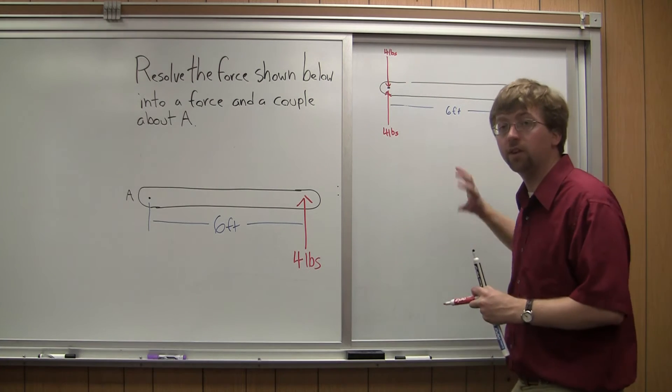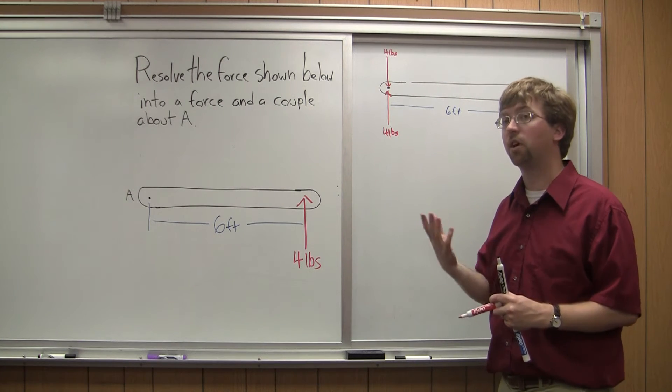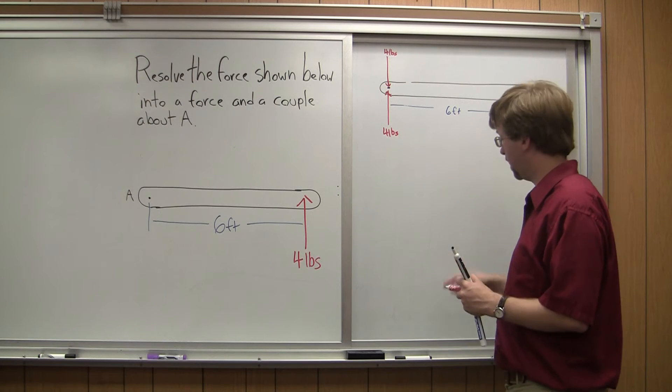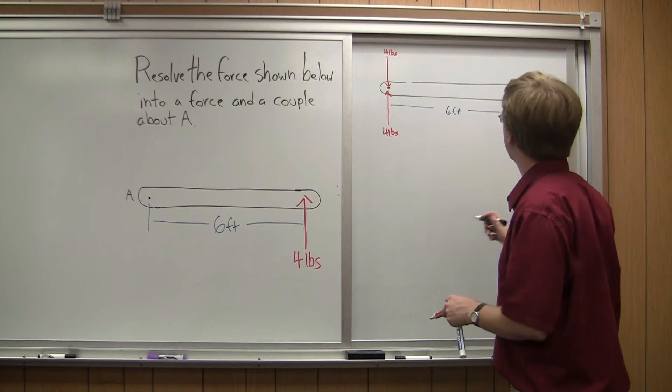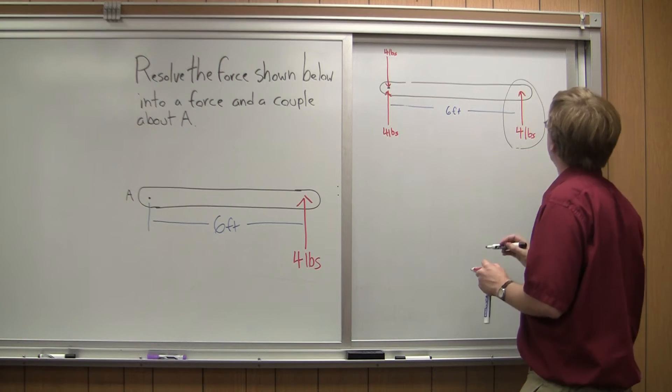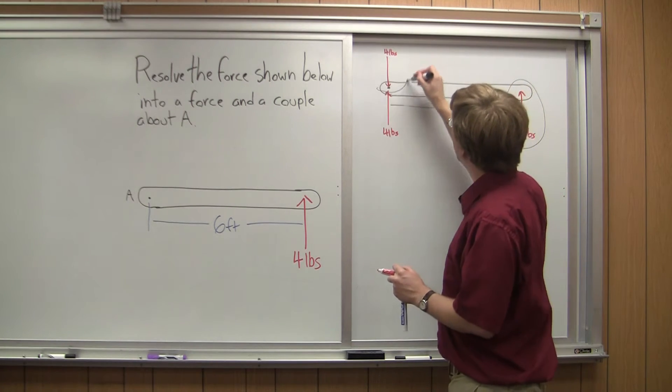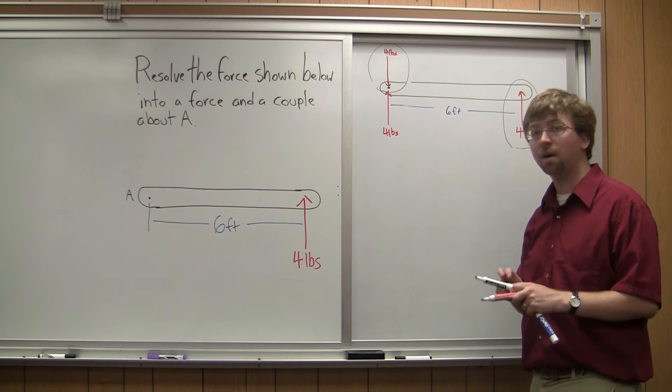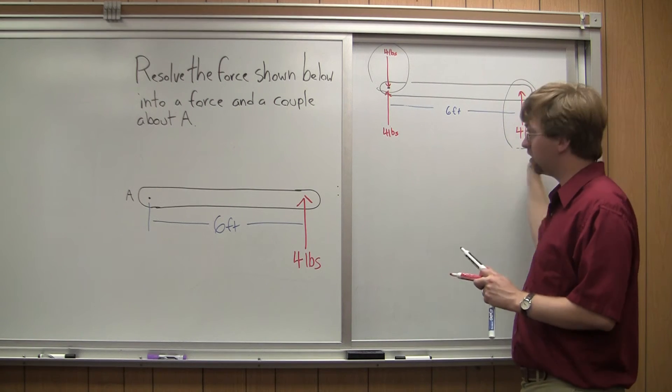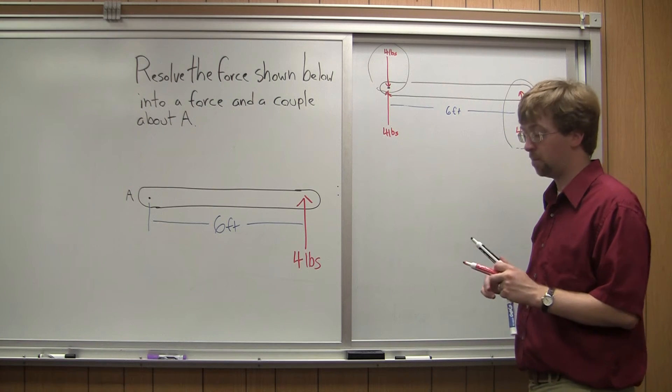When I added these two, since they're equal and opposite, I essentially added 0 to my equation. So now I can think about two things. First of all, I'm going to think about the couple that's exerted by this. So I've got a 4-pound force there, and an equal and opposite and parallel force over there, not collinear. So this is a couple.